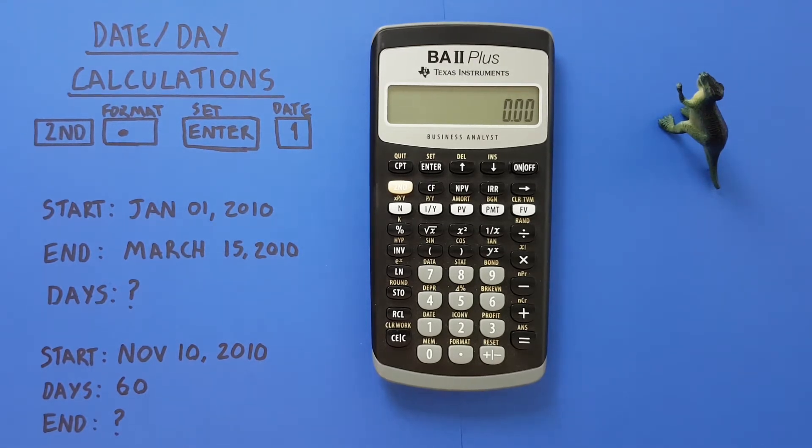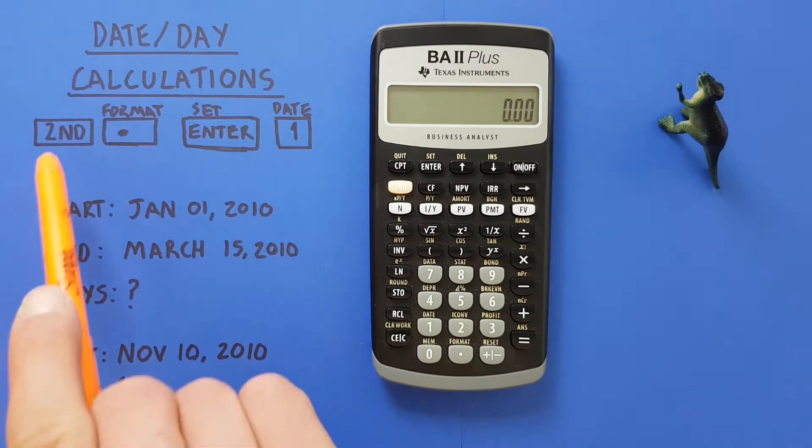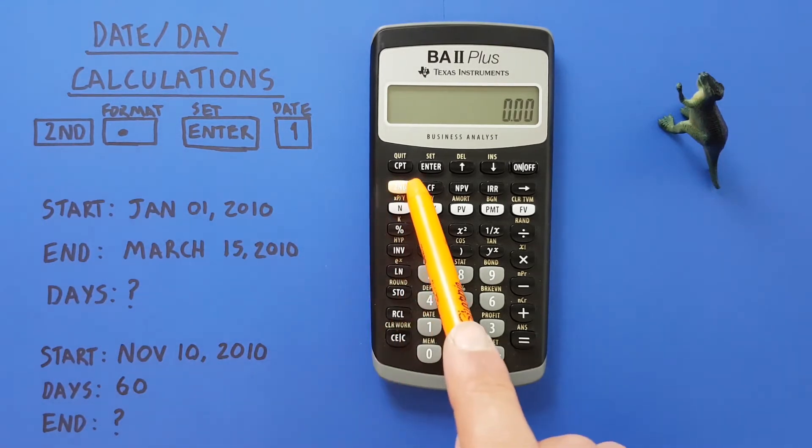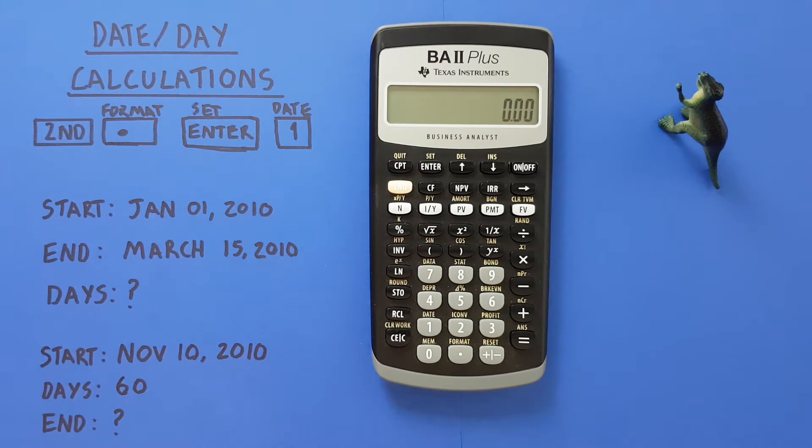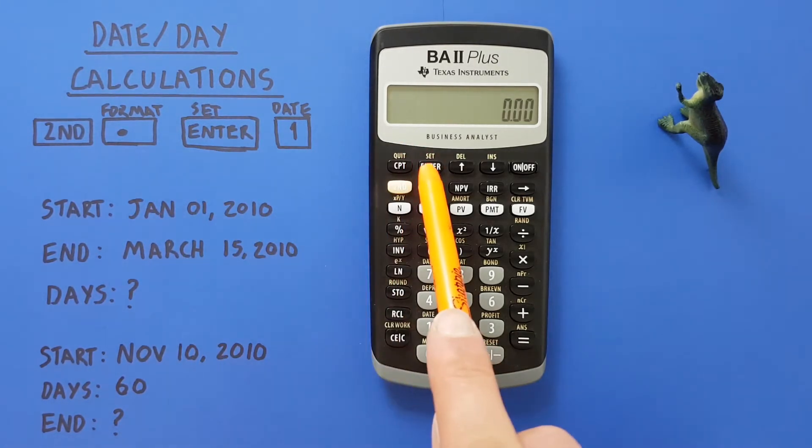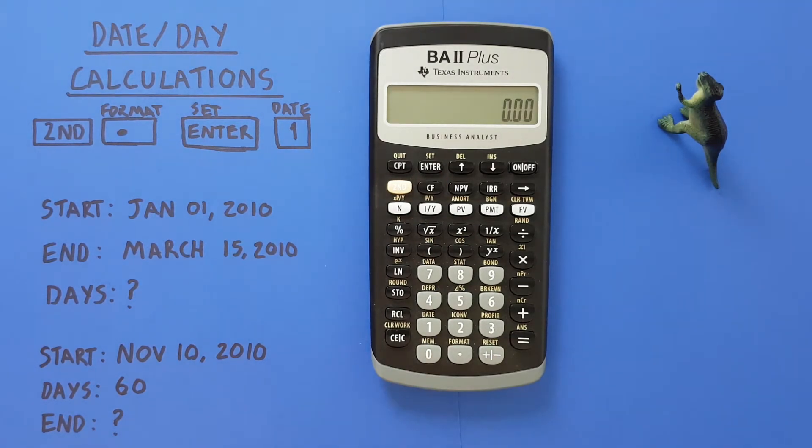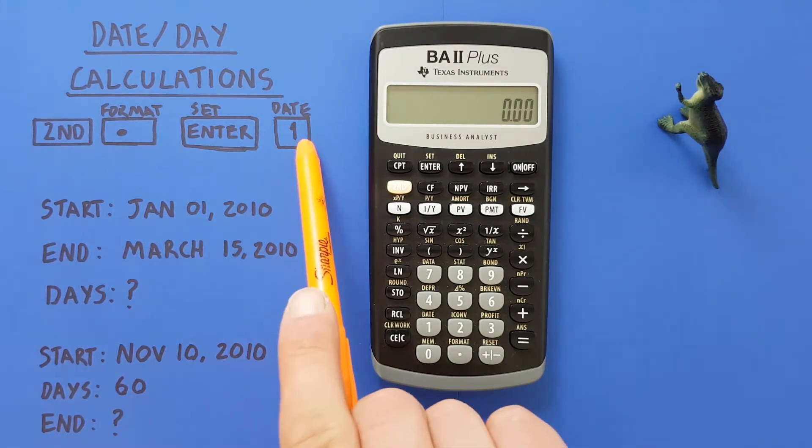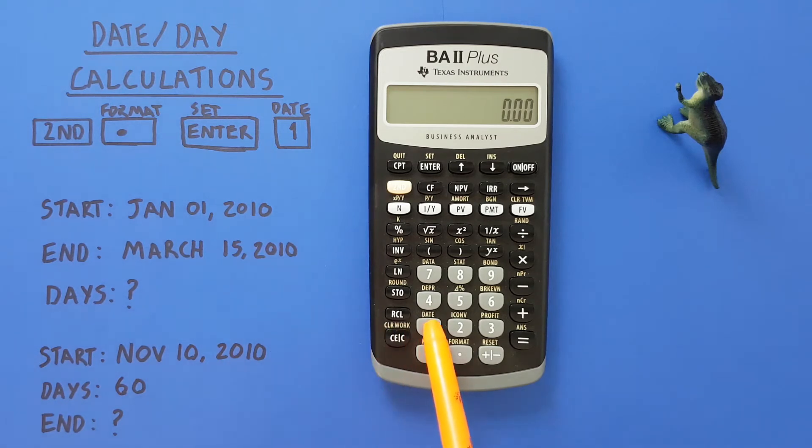To do this we'll be using the second function key, located here, the decimal key with the second function of format, located here, the enter key with the second function of set, located here, and the one key with the second function of date, located here.